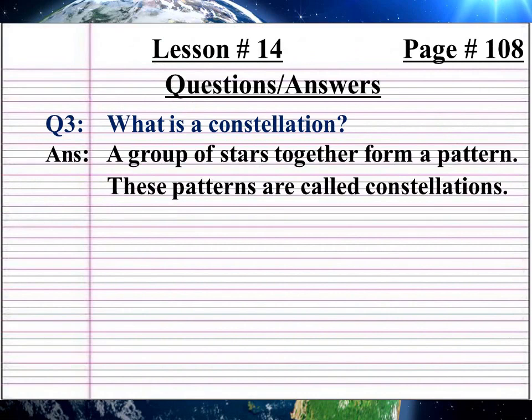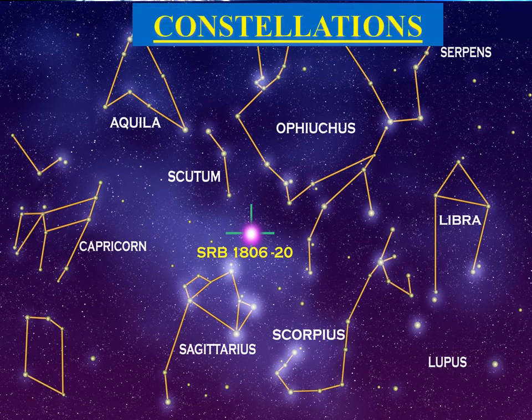Question 3: What is a constellation? (Urdu: Constellation kya hai?) Answer: A group of stars together form a pattern. These patterns are called constellations. (Urdu: Sitaron ka group ek saath pattern yani namoone banate hain — yeh patterns constellations kehlaate hain.) Look at the picture: Constellations.